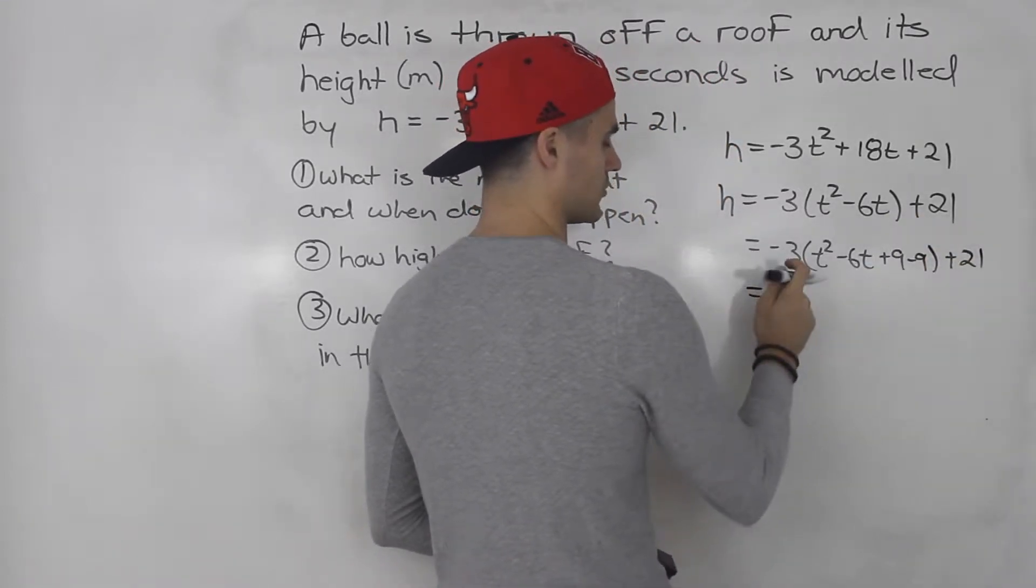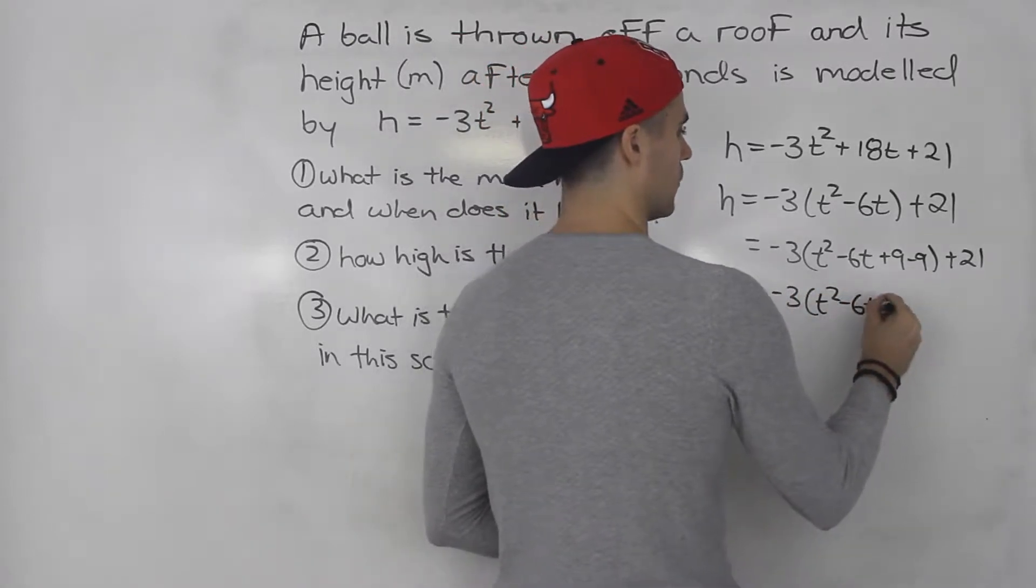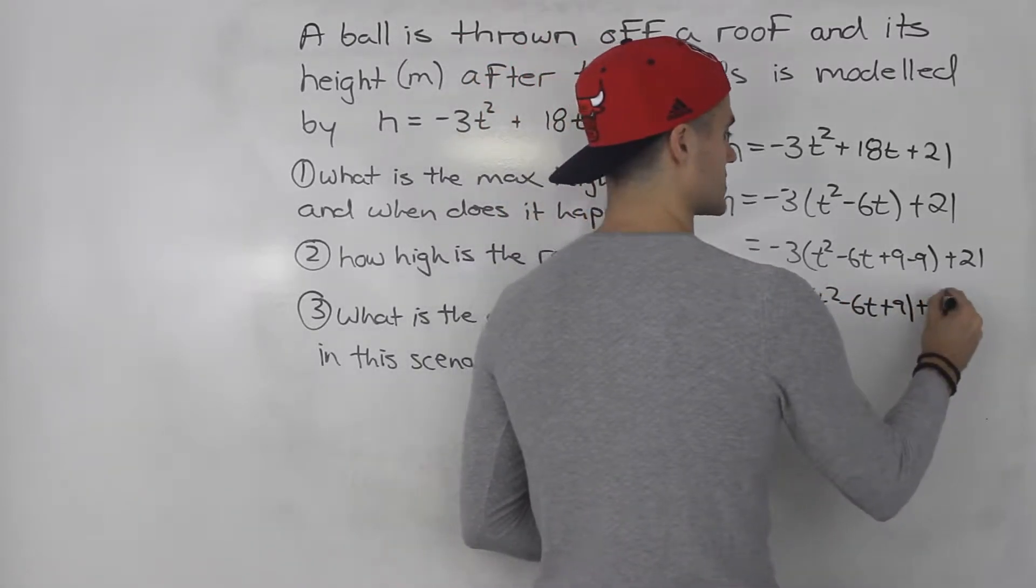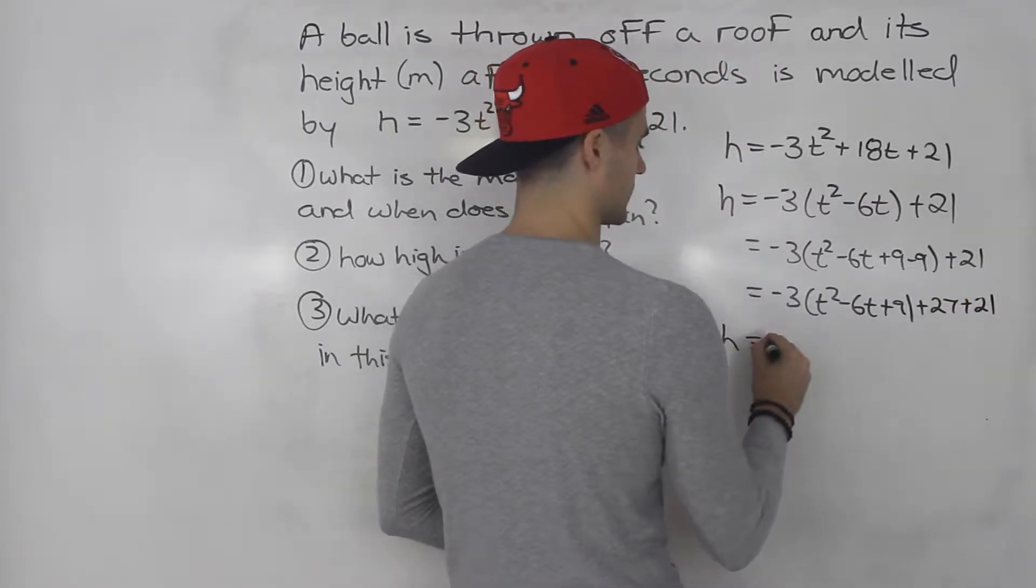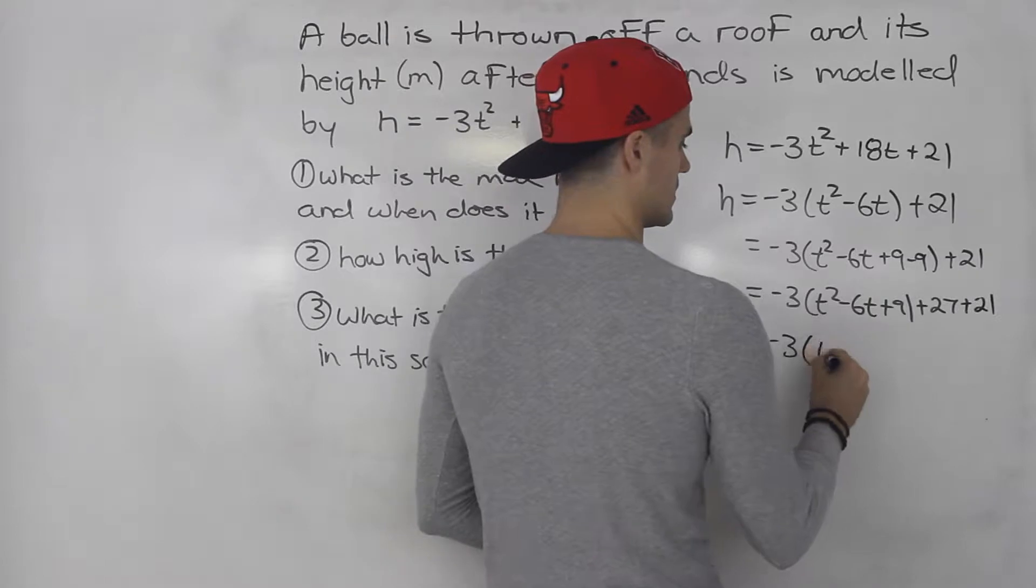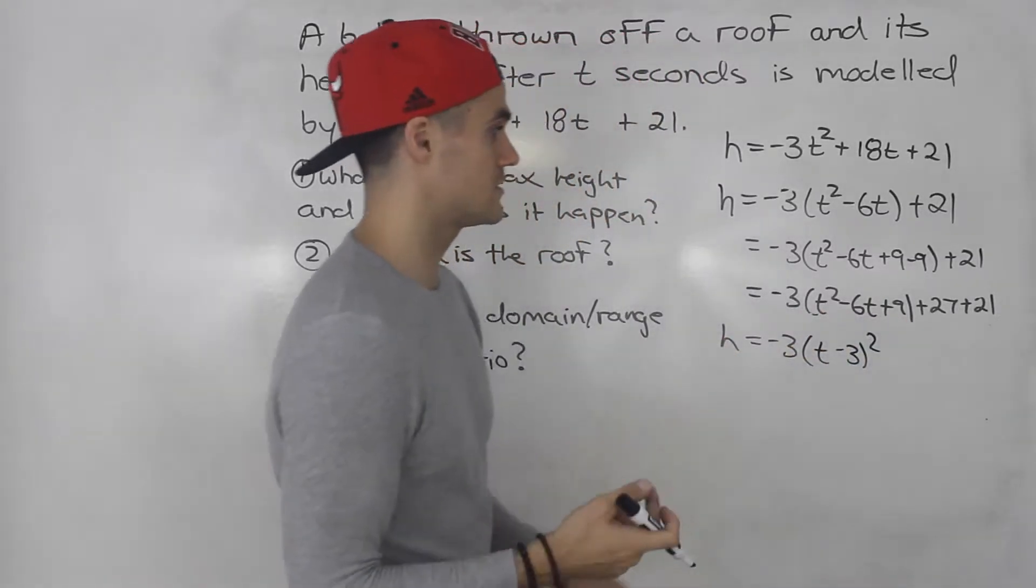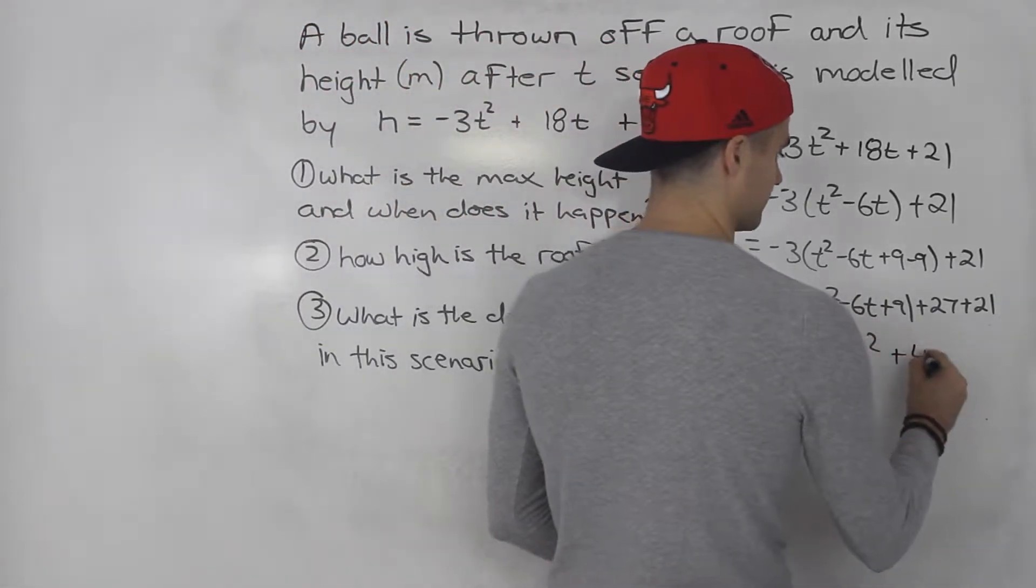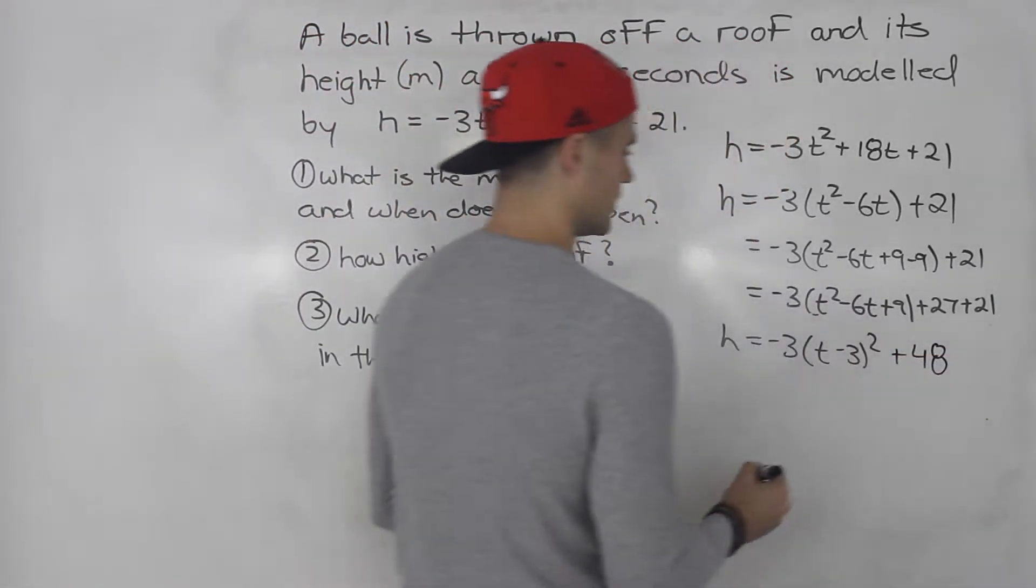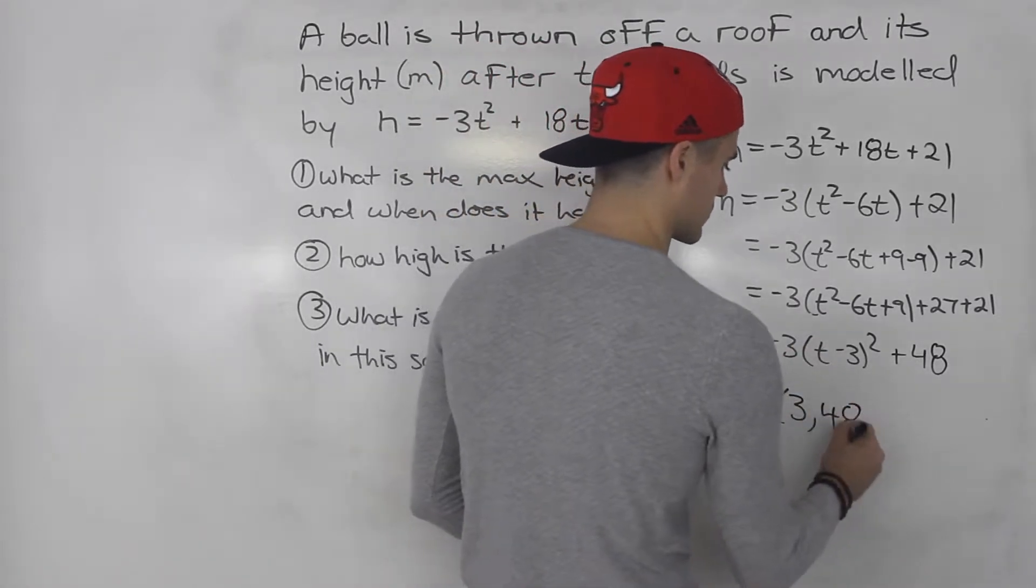Take out the negative 9, multiply it by the negative 3, which becomes positive 27 plus 21. Then from here, we got negative 3 times t minus 3 squared. That's what this bracket factors into. And then 27 plus 21, that gives us 48. So the vertex of this is 3 and 48.